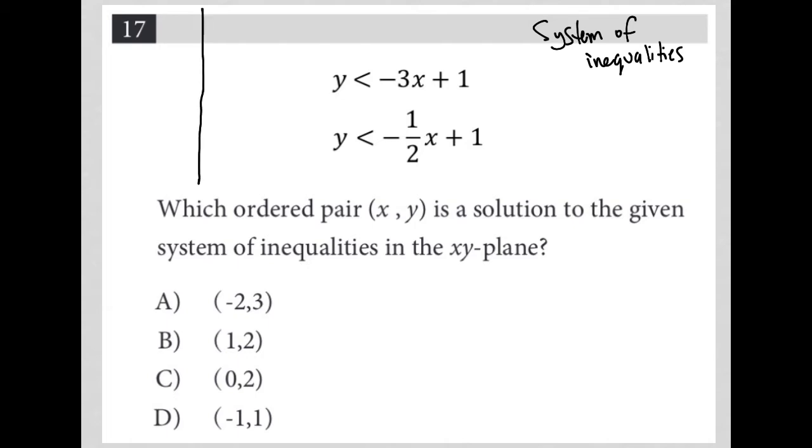So I'm going to get my graph set up here. The question says, which ordered pair (x, y) is a solution to the given system of inequalities in the x-y plane? So there's another hint, right? In the x-y plane is a hint that I need to graph.